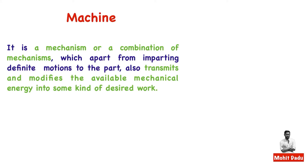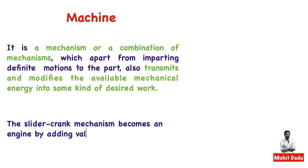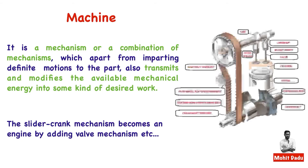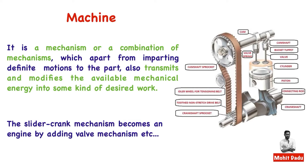The slider-crank mechanism can be used in an IC engine where conversion of energy into mechanical work is happening. For that you may have to add other mechanisms, such as a valve mechanism. You have a cylinder in which the piston is reciprocating with a connecting rod and crank, but for power production you must add the valve mechanism, which is actuated by a cam driven through a belt drive. So a machine is a combination of mechanisms.